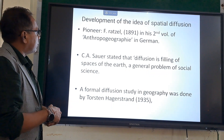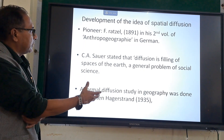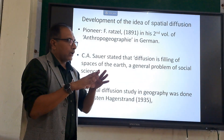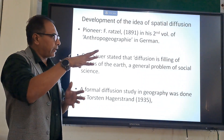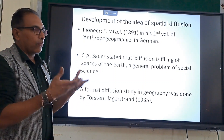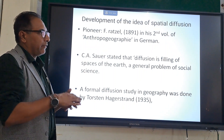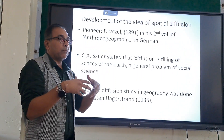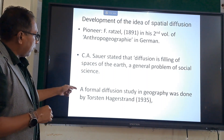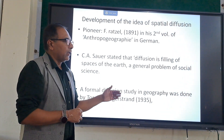Later on, another geographer, C.S.S. Ward, stated that diffusion is a filling of spaces of the earth — a general problem of social science. Filling of spaces means the space becomes filled by various compositions and parameters. It may be filling by a physical component, like a river coming from a particular source to its destination — how the water is diffused — or even a volcanic eruption, how the erupted material is diffused over the surface of the earth.